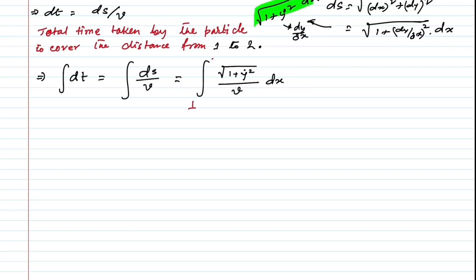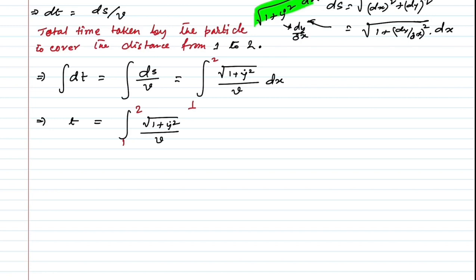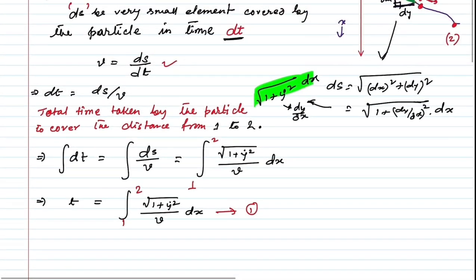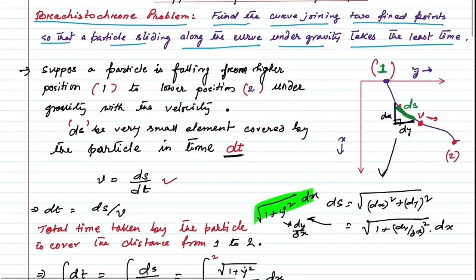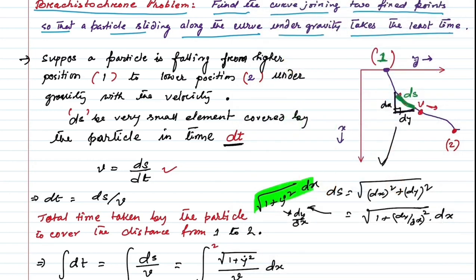Integrating DT gives T on the left-hand side. The right-hand side remains the same. This is equation number 1. Now, let's use energy conservation to find V.